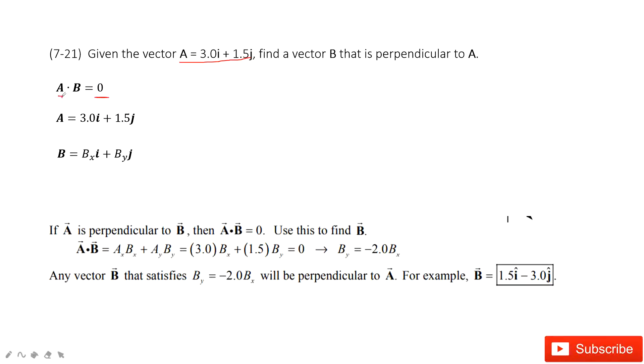So in this one, we need to know the product A and B is zero. A can be written as x and y-component, B can also be written as x and y-component. Therefore, we can get this equation equals to zero.